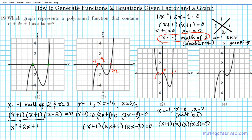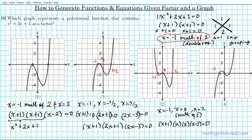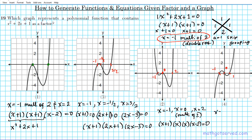Let's look at option four and see why it's not the answer. The roots are x equals negative one, x equals zero, and x equals one — three roots with no double roots. The related factored form is x plus one times x times x minus one equals zero. We can clearly see this is not the answer because x plus one does not show up twice.